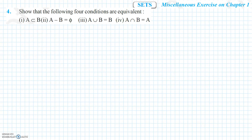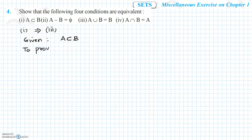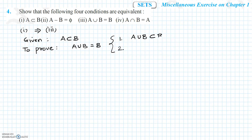Next I will prove that the first condition implies the third — that is, we are given A is a subset of B and we want to prove A union B equals B. As we know, to prove that two sets are equal we have to prove two cases: first, A union B is a subset of B, and second, B is a subset of A union B. Now I will prove the first case: A union B is a subset of B.